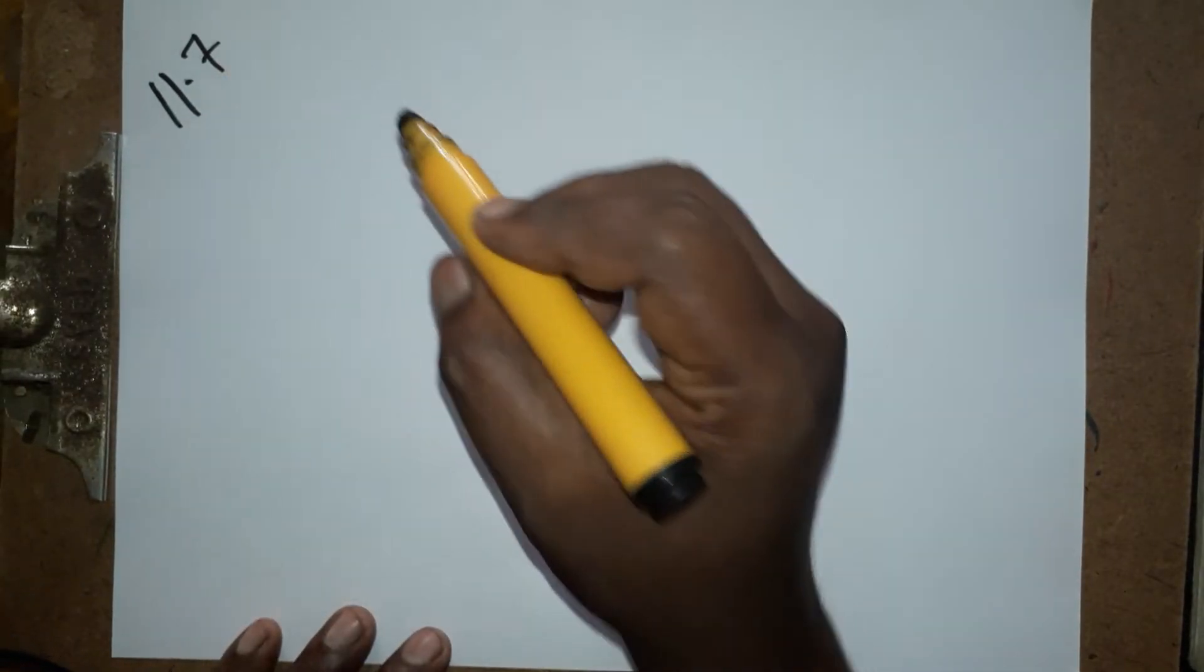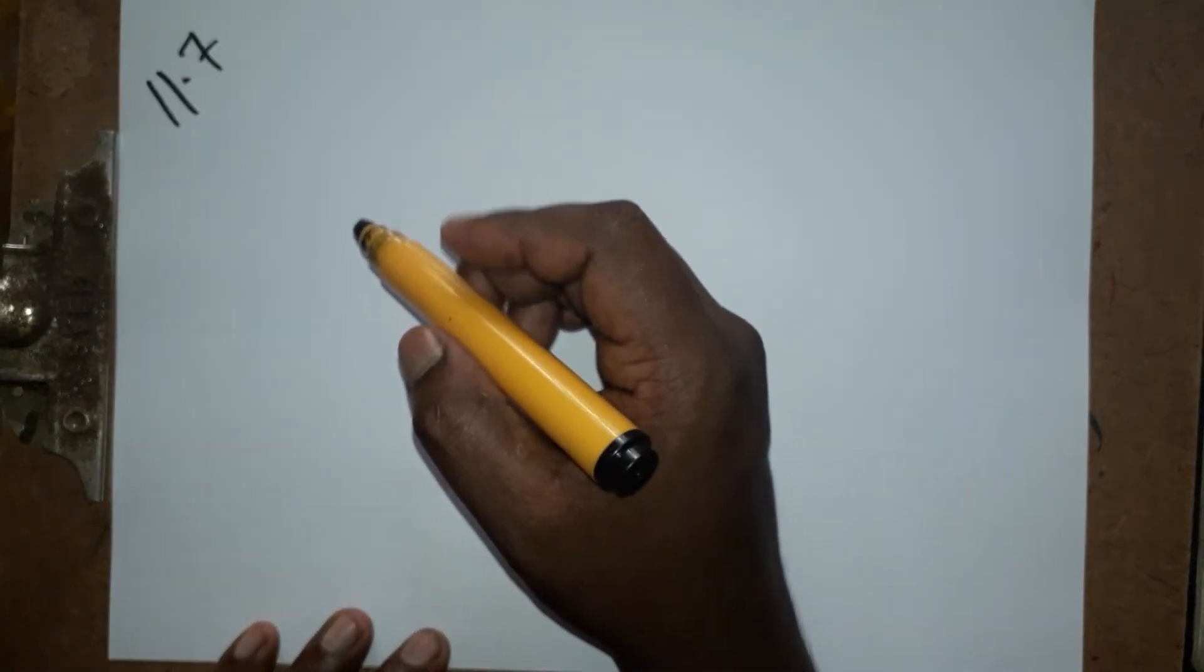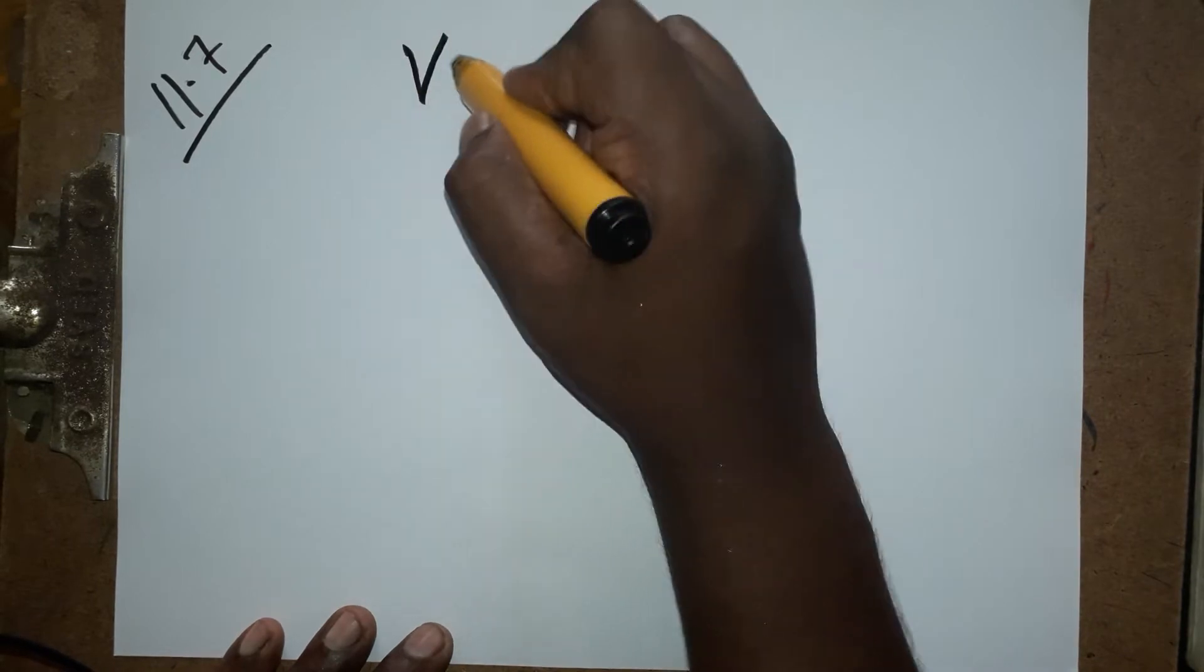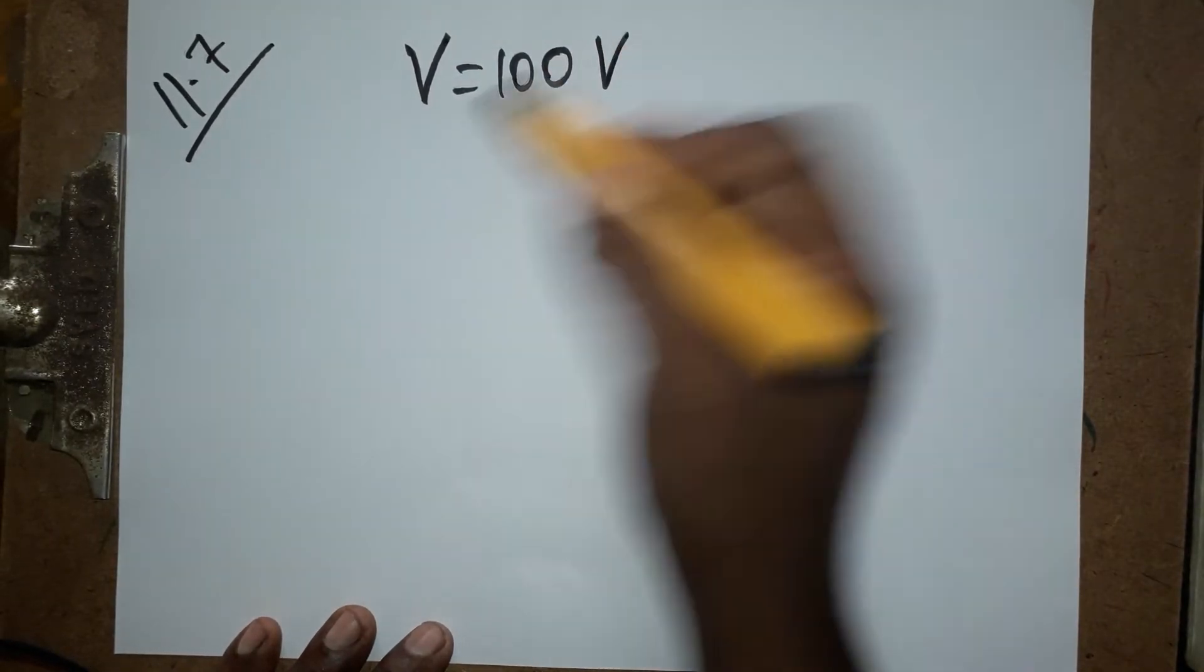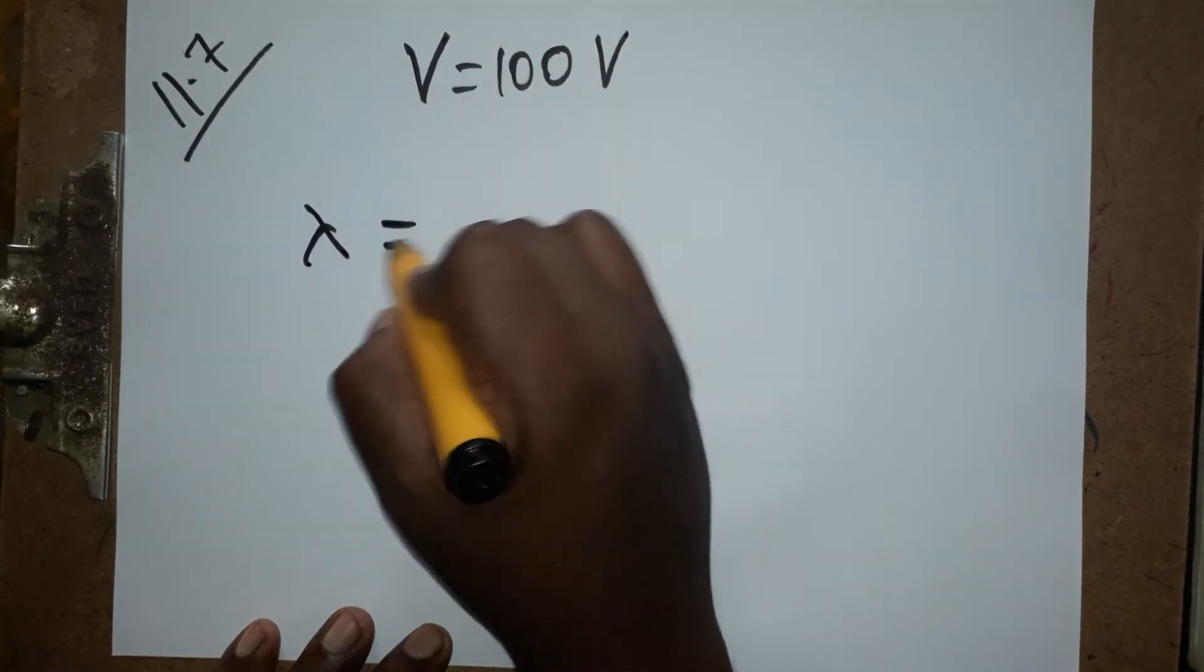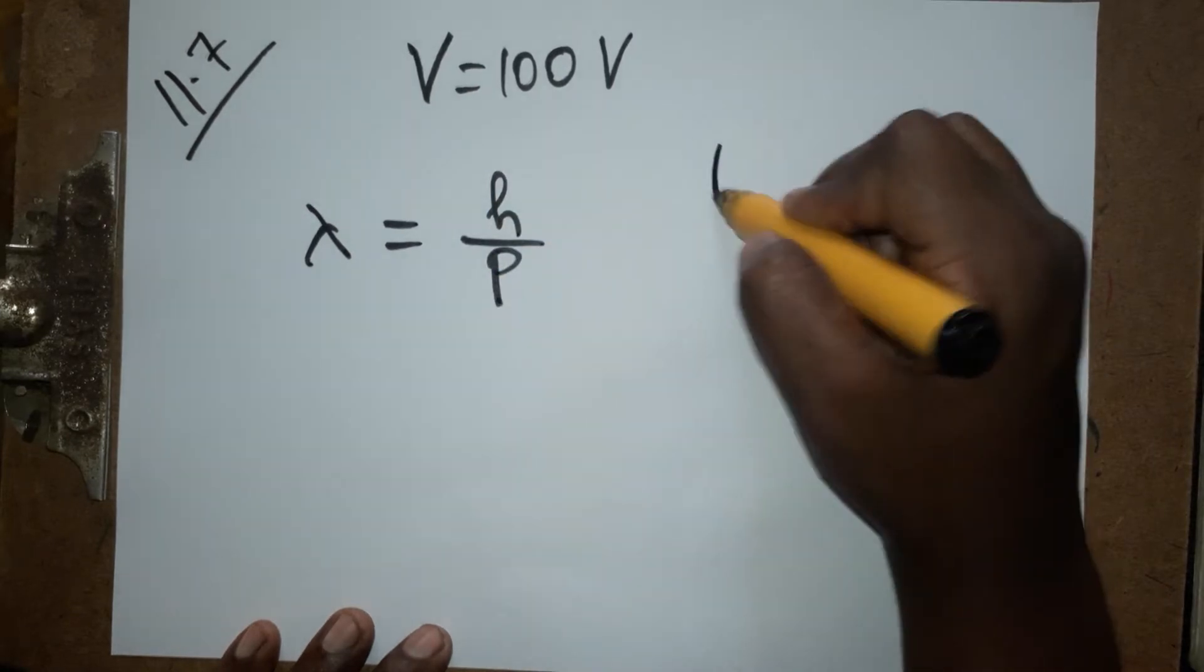This is the question NCERT example 11.7 from the photoelectric effect. Voltage is given as 100 volt. They are asking for wavelength. Wavelength is equal to h divided by p because momentum is equal to h divided by lambda.